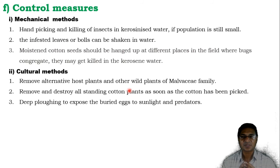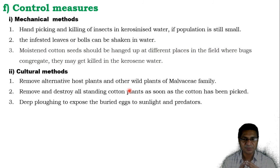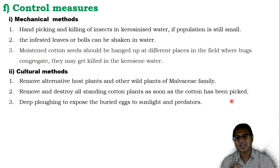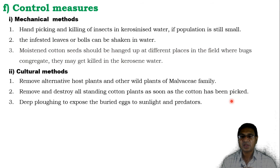The next method is the cultural method. Remove alternative host plants and other wild plants of the Malvaceae family, which is also effective to control this pest. Remove and destroy all standing cotton plants as soon as the cotton has been picked up. Many farmers remove all standing cotton plants and burn them in the field. Deep plowing is also effective to expose the buried eggs to sunlight and predators.